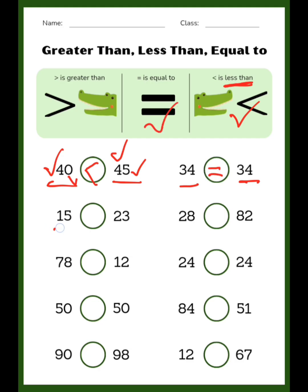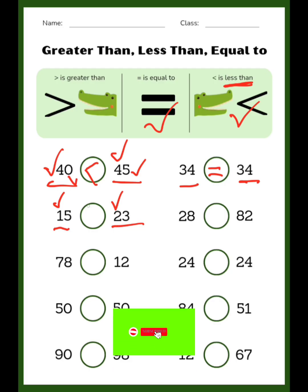Now here it is 15 and 23. First check the tens place — here it is 1 and here it is 2. Which one is more? 2 is more, so the crocodile face points towards 23. You can solve the rest of the problems and tell me in the comment section which sign you are going to use: greater than, equal to, or less than.